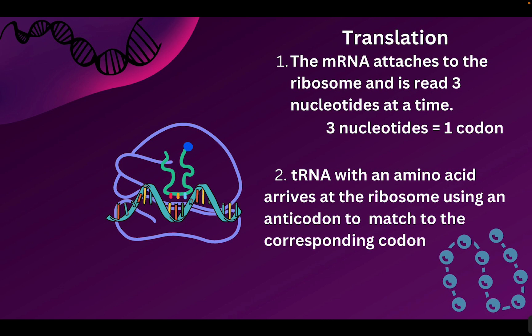Those transfer RNAs — the tRNAs with the hairpin shape — are floating around the cell carrying amino acids. The tRNA with the correct amino acid arrives at the ribosome. It has nitrogenous bases just like mRNA, and on its bottom part, three exposed bases called an anti-codon. Whatever the codon says, the corresponding bases of the anti-codon will match — so if the codon is AUG, the anti-codon UAC at the bottom of the tRNA will match it. This anti-codon directs the tRNA to match a specific codon, bringing the amino acid in the correct order.